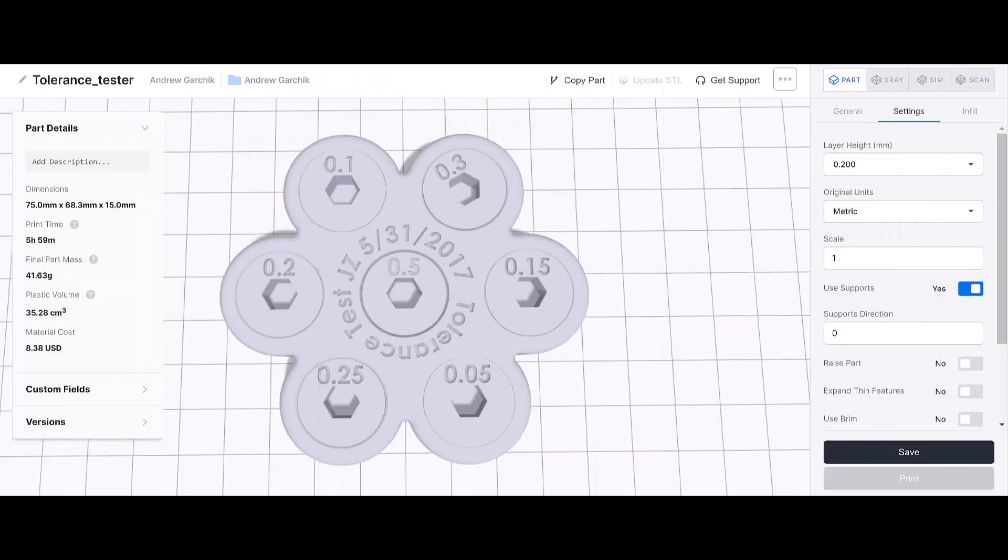Before we get into creating our part, let's first talk about a tolerance test. This is a test file that you can create on your own or you can download a tolerance test file online. So what does this tolerance test do? Viewing the STL file inside of slicing software, we can see that my tolerance tester has seven different sizes ranging from 0.05 millimeters to 0.5 millimeters. Each circle can be turned using an Allen key and we can see what the fit will look like for our printer setup.